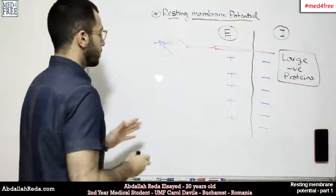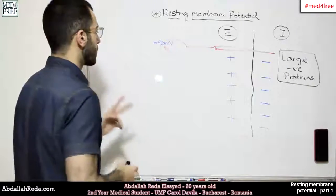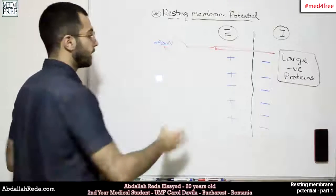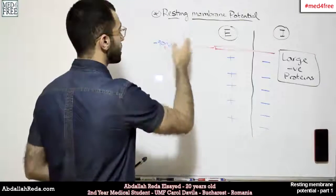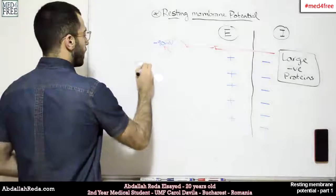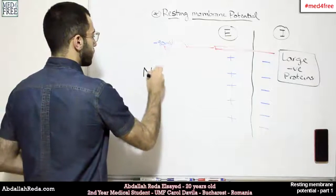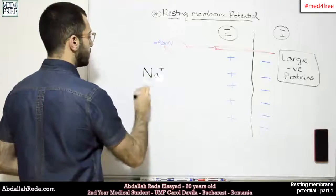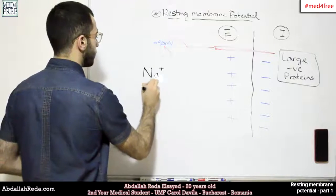Now, I'm going to talk about two very important ions that play an important role in keeping the resting membrane potential. We have sodium and we have potassium.